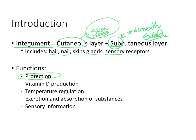Protection is a very important function of the integument. If we are in a very hot environment, we start sweating — that is our body's way to cool us down. If we are in a very cold environment, the hair in our skin stands up, which protects us from losing heat to the external environment. So another function of the integument is temperature regulation.